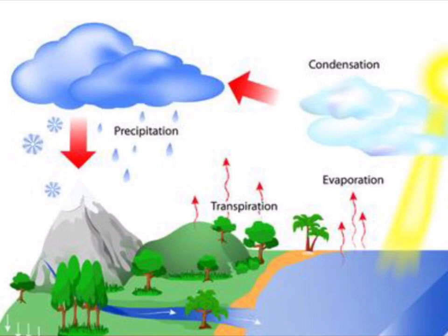When the clouds start getting heavy and cannot hold the water droplets anymore, they fall back to the earth in the form of rain, hail or snow. This process is called precipitation.